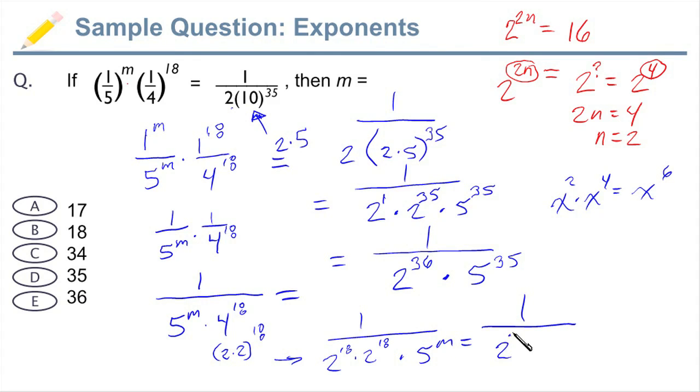That's the same as 2 to the 36 times 5 to the m equals, and then the right side of things we've already reduced to say that that's the same thing as 2 to the 36 times 5 to 35. Ah, look at that. 2 to the 36 is the same. The 1, the numerator is the same. So what do we say? Same base. All we have to do is set the exponents equal to each other, and in this case, m actually equals 35.